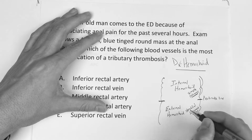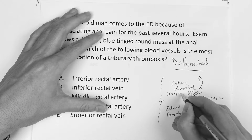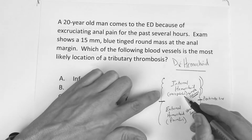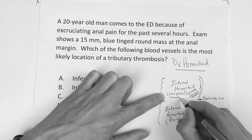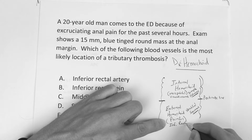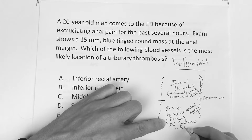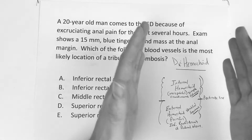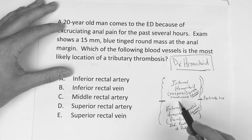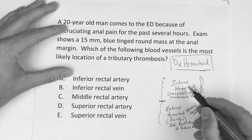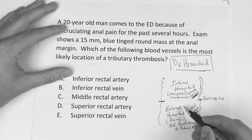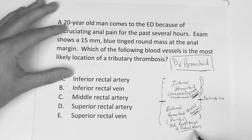Something you've got to know: an internal hemorrhoid is not painful because it has visceral innervation. The external hemorrhoid is going to be painful, innervated by the inferior rectal branch of the pudendal nerve. So to recap the simple facts: internal is above the pectinate line, external is below it; simple columnar cells above, stratified squamous below; internal is not painful — visceral innervation; external hemorrhoid is painful, innervated by the inferior rectal branch of the pudendal nerve.